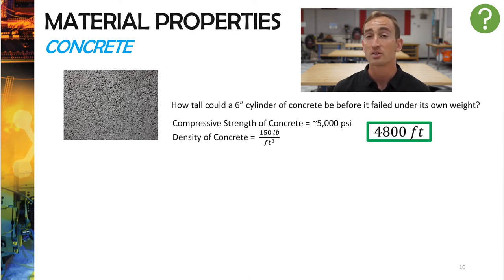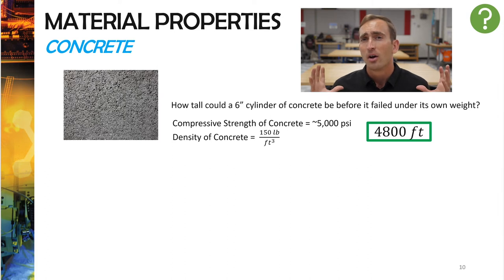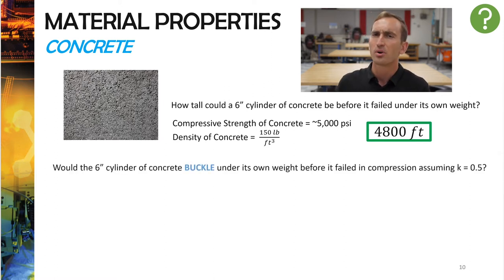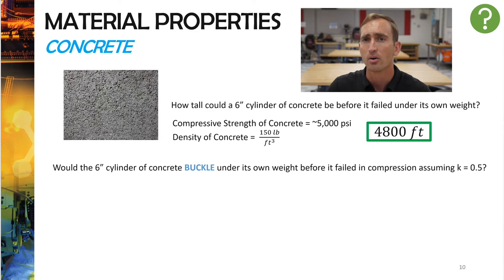Let's look at this example for a real-world application. In material properties, we discussed how good the compressive strength of concrete was. We calculated that in order for a six-inch cylinder of concrete to fail under its own weight, it would have to be 4,800 feet tall to effectively crush itself. But this column can also technically buckle. So would that six-inch column, if it was 4,800 feet tall, buckle before it was crushed under its own weight? I want you to take the P-critical equation and figure out whether or not this column would actually fail under its own load.